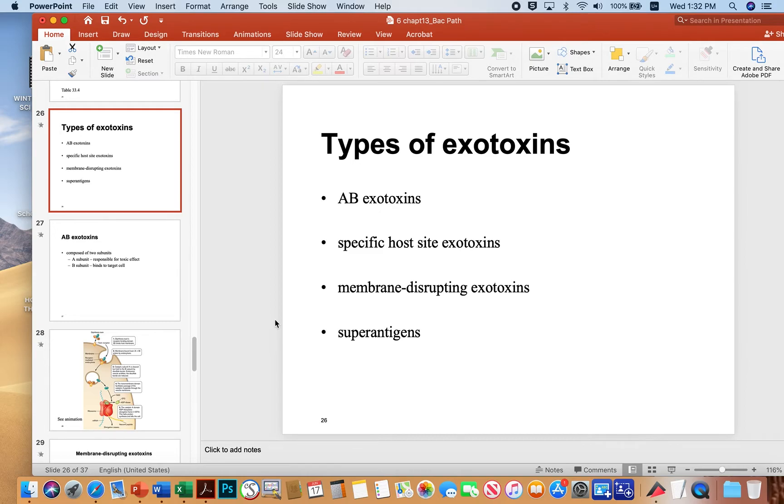The types of exotoxins or protein toxins that microbes produce are listed here. There's AB toxins that have an A portion and a B portion, which I'll talk about in subsequent slides. There's specific host site exotoxins, ones that specifically affect certain kinds of tissues. And then there's the membrane-disrupting toxins that specifically focus on membranes. And then lastly, the superantigens, which are toxins which in and of themselves don't really do anything. But what they do is overstimulate the immune response.